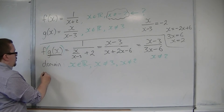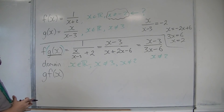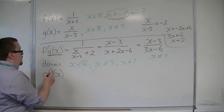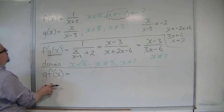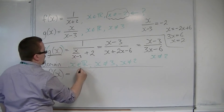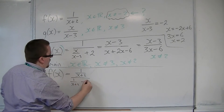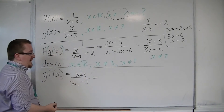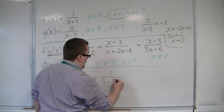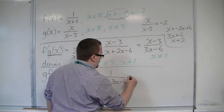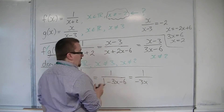If I had done g of f of x, we would have a slightly different story. So to show you that this would be different: f of x now goes into g, so we're going to get 1 over x plus 2, over 1 over x plus 2, take away 3. Multiplying everything by x plus 2, I get 1 over 1 take away 3 lots of x plus 2, so 3x plus 6 — giving 1 over 1 minus 3x minus 6, which is 1 over minus 3x minus 5.